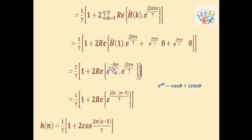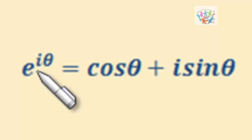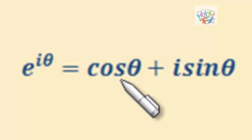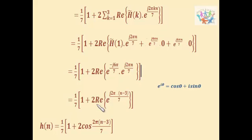The value of H̄(1) is e^(−j6π/7), so multiplied by e^(j2πn/7), we take 2πj as common outside, giving (n−3)/7 inside. Using Euler's formula e^(jθ) = cos θ + j sin θ, and taking only the real part, we get cos(2π(n−3)/7). So finally h(n) equals (1/7) times [1 + 2cos(2π(n−3)/7)].